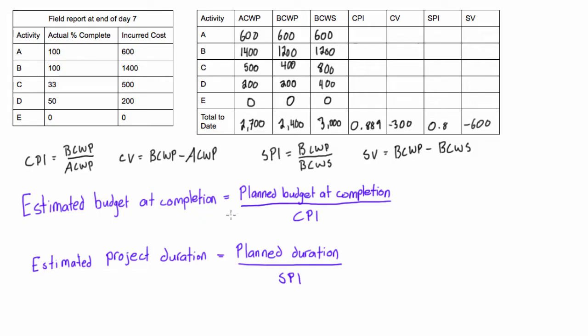So we have our estimated budget at completion, which is just the planned budget at completion over the CPI. It's really simple stuff. We also have estimated project duration equals planned duration over the SPI.